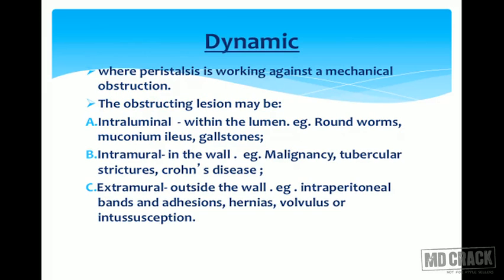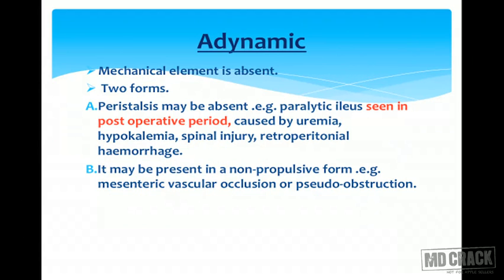In dynamic obstruction, peristalsis is working against a mechanical obstruction. The obstructing lesions may be intraluminal — within the lumen — as seen in roundworms, meconium ileus, or gallstones. The second lesion can be intramural — in the wall — as in malignancy, tubercular stricture, or Crohn's disease. Extramural lesions are outside the wall, for example, intraperitoneal bands and adhesions, hernias, volvulus, or intussusception.